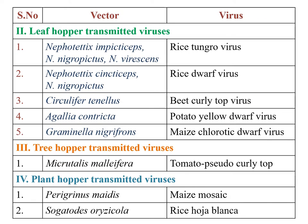Leafhopper-transmitted viruses: rice tungro disease caused by rice tungro virus is transmitted by Nephotettix impicticeps and Nephotettix virescens. Rice dwarf disease is transmitted by Nephotettix cinctriceps and Nephotettix nigropictus. Beet curly top virus is transmitted by Circulifer tenellus. Agallia constricta transmits potato yellow dwarf virus, and Graminella nigrifrons transmits maize chlorotic dwarf virus.